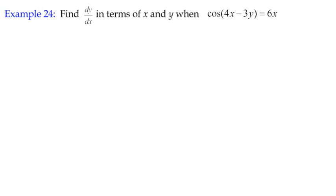This is an interesting example because it's maybe the first time we've come across a trig function, not just in terms of one variable, in terms of x and y. So we have an implicit trig function. So how do we deal with that in this particular equation? We've got an expression cos of 4x minus 3y equals 6x.